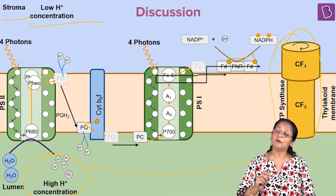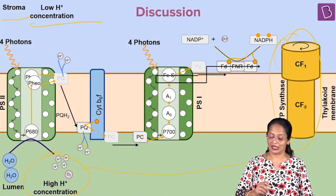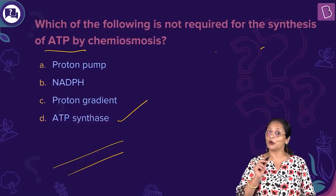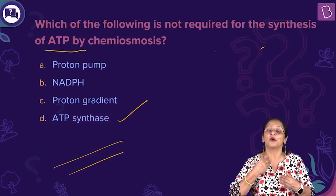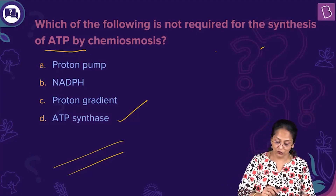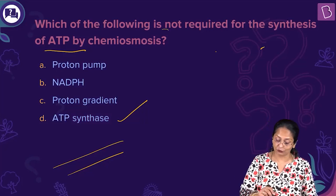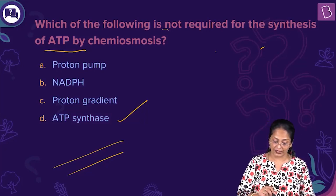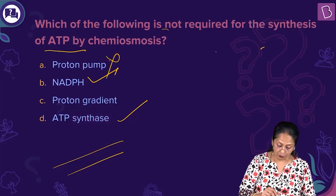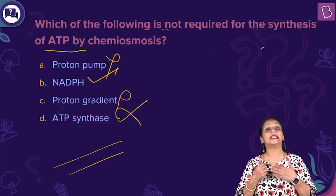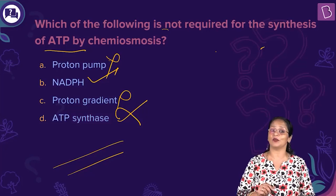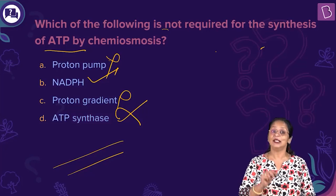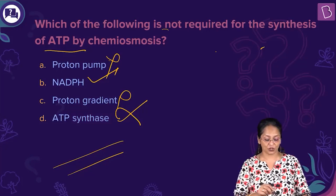NADPH is also another energy-rich molecule, but this is not the answer we are looking for. The proton pump is the high energy created because of the proton gradient as the protons move through the channel. The question says: which of the following is not required for the synthesis of ATP? NADPH is not required. Proton pump is required. Proton gradient — definitely it is required. And ATP synthase — without ATP synthase, there is no synthesis of ATP. So what we don't require for ATP formation by chemiosmosis is NADPH.